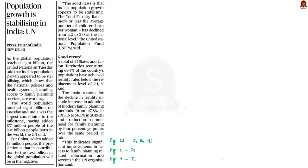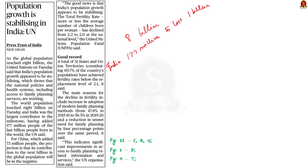As per the United Nations report, the world population has touched 8 billion. The UN observed that India was the largest contributor to the milestone. It also said that India has added 177 million people to the last billion people born in the world. China, on the other hand, only added 73 million people to the last billion, and it is projected that China's contribution to the next billion in global population will be in the negative.